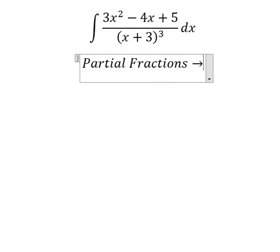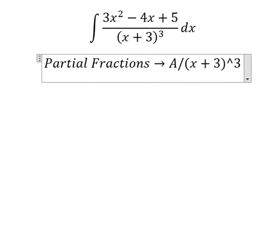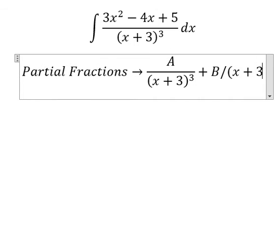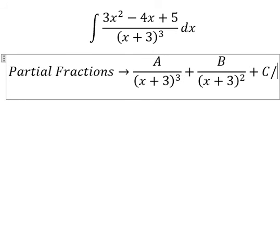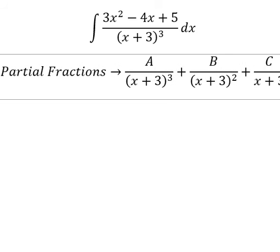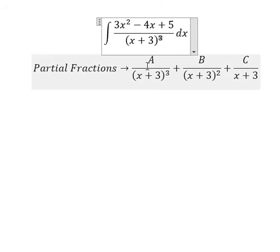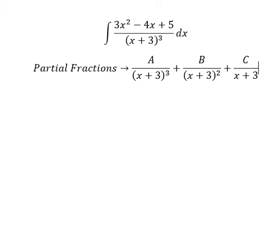We put A over (x+3)³, B over (x+3)², and C over (x+3). Because we have the power 3, that's why we need to have three fractions, and we need to reduce the power from 3 down to 1. Now we find the common denominator.